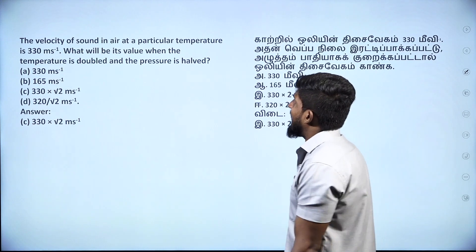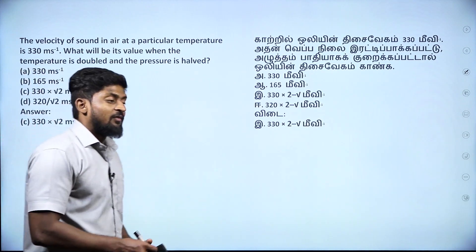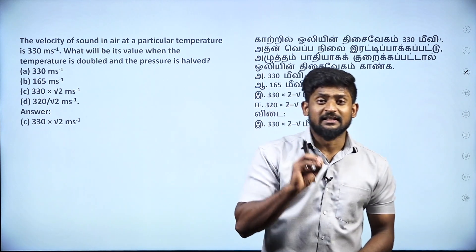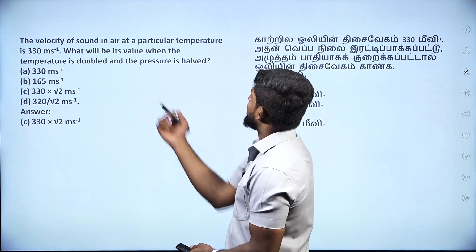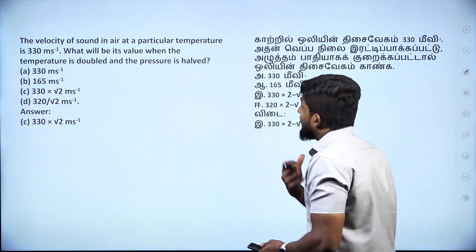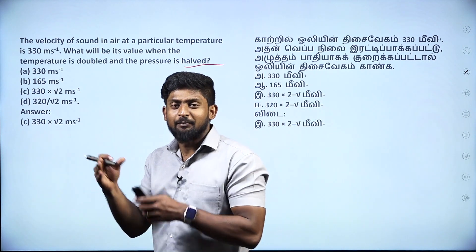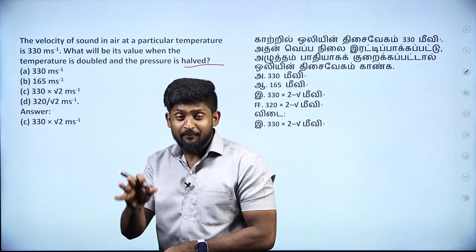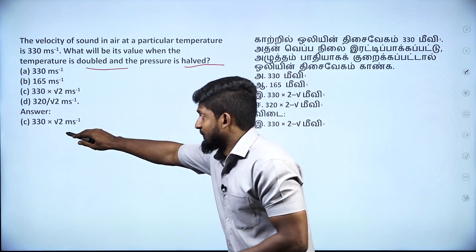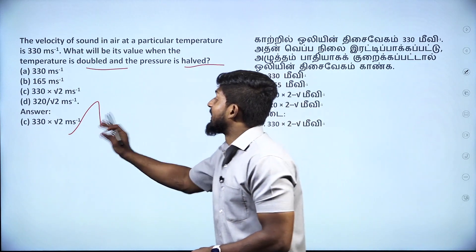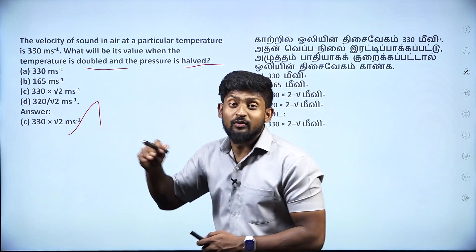Velocity of sound in air at a particular temperature is 330 meters per second — that is at 0 degrees Celsius. What will be the velocity when the temperature is doubled and the pressure is halved? Pressure does not affect sound. But temperature is doubled — so the answer is 330 into root 2 meters per second. The higher the temperature, the higher the velocity of sound.